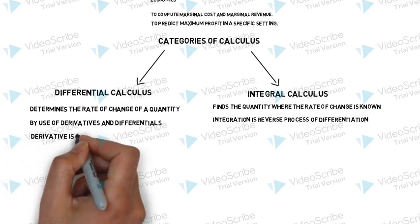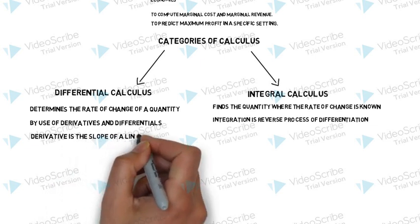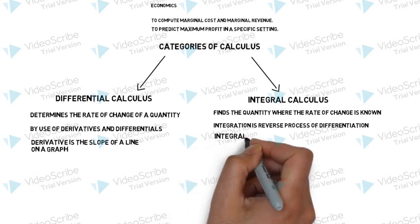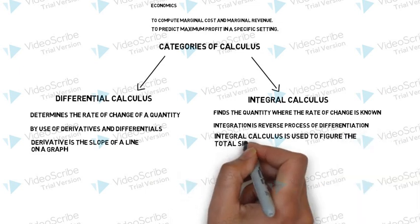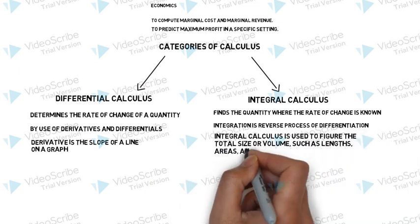The derivative is the slope of a line on a graph, whereas the integral calculus is used to figure the total size or volume such as length, areas and volumes.